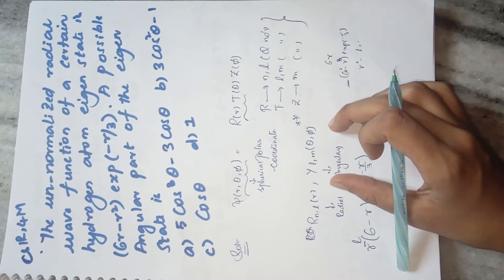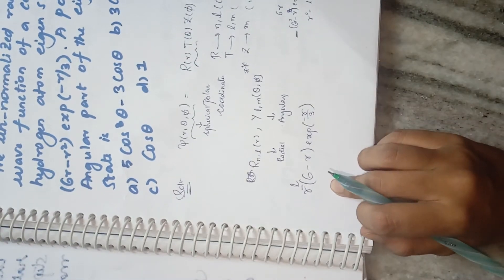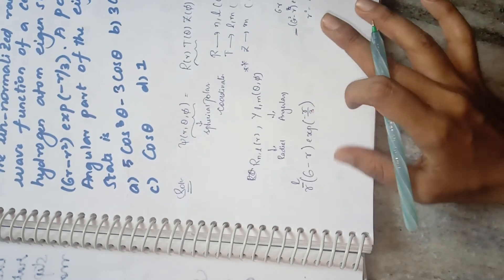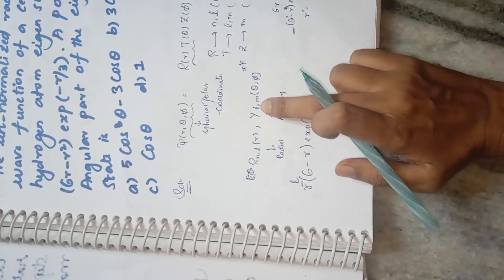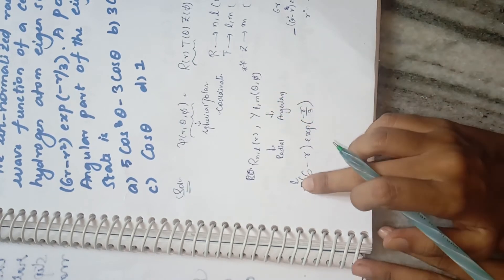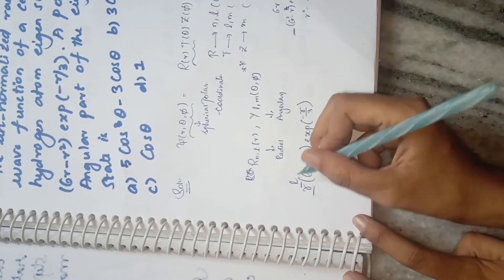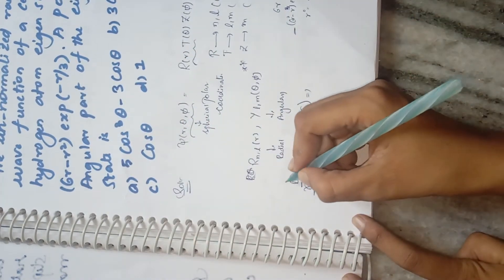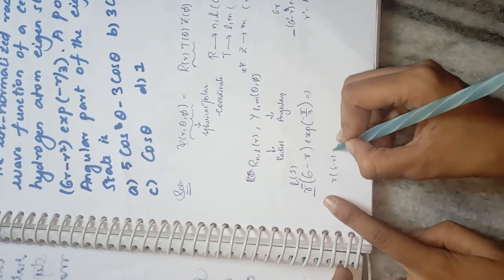In this particular question we have to find the angular part of the given eigenstate. The given radial wave function — I've taken r common, giving r(6 − r)·e^(−r/3). I take r common to find my l value. Whatever is the power of r after factoring, that is your l value.